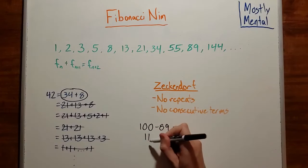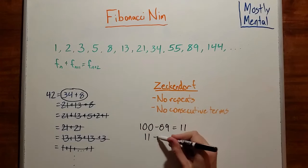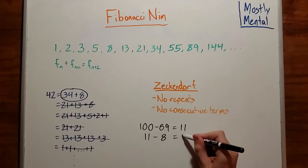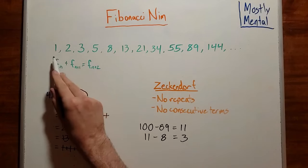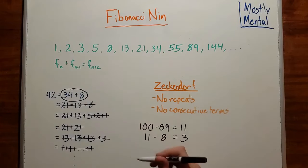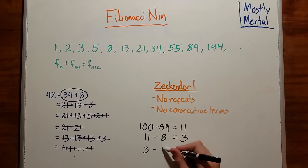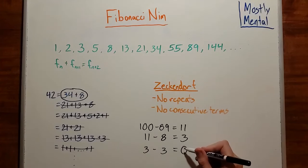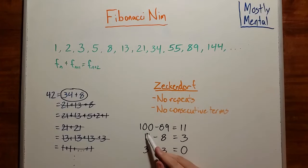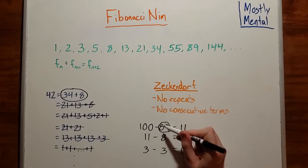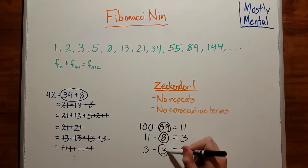So the largest term that fits into 11 is 8, which leaves us with 3. And then the largest term that fits into that is 3. It is a Fibonacci number. And that takes us down to 0. So the Zeckendorf representation for 100 is 89 plus 8 plus 3.